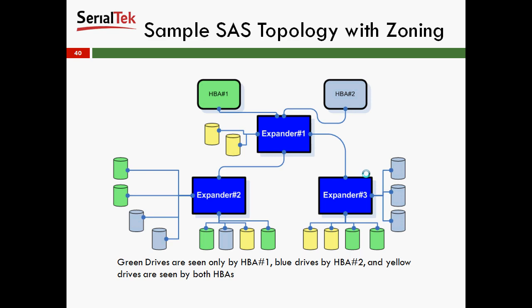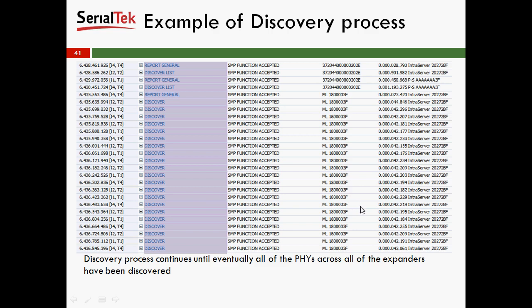Here is a sample SAS topology with zoning. HBA1 and HBA2 both connect into an expander. Green drives are seen only by HBA1, blue drives are only seen by HBA2, and yellow drives are seen by both HBAs. With zoning, each HBA has access to its designated drives, and both HBAs share access to the yellow drives. In the discovery process example, report general, discover list, and report general are sent repeatedly until all PHYs across all expanders have been discovered.